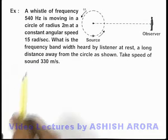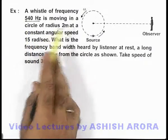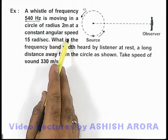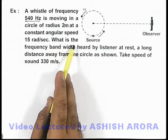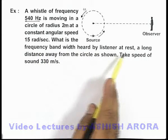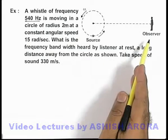In this example, we are given that a whistle of frequency 540 Hz is moving in a circle of radius 2 meters at a constant angular speed of 15 rad/s. It is asking what is the frequency bandwidth heard by the listener at rest, a long distance away from the circle as shown.